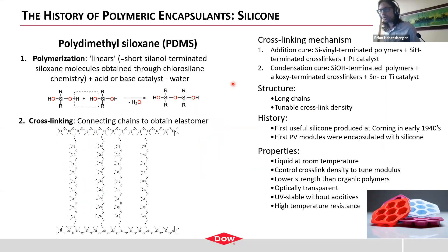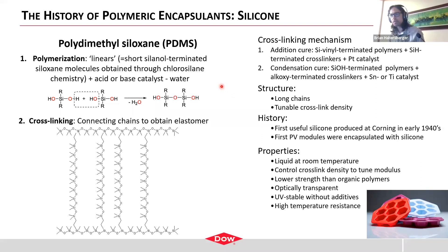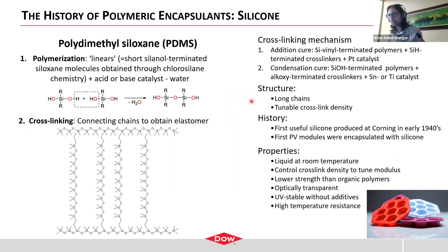Moving on to silicone — a colleague, Guy Bukharn of Dow Performance Silicones, contributed this slide. PDMS, polydimethylsiloxane, is synthesized in linear form using an acid-based catalyst and a condensation-type reaction. A cross-linking reaction can then be conducted to turn it into rubber, using either an addition cure or a condensation-type cure. This allows tunable cross-link density, which allows tunability of the modulus and other physical properties. The first useful silicone was produced at Corning in the early 1940s, and in the 50s it was first used as a PV encapsulant.